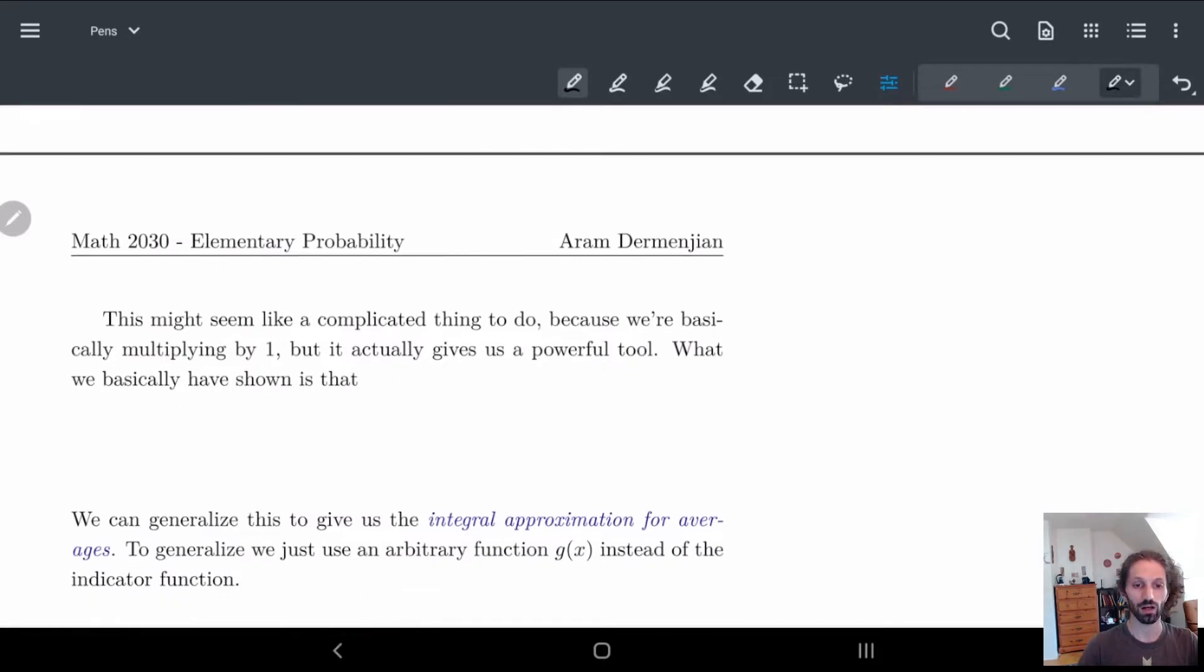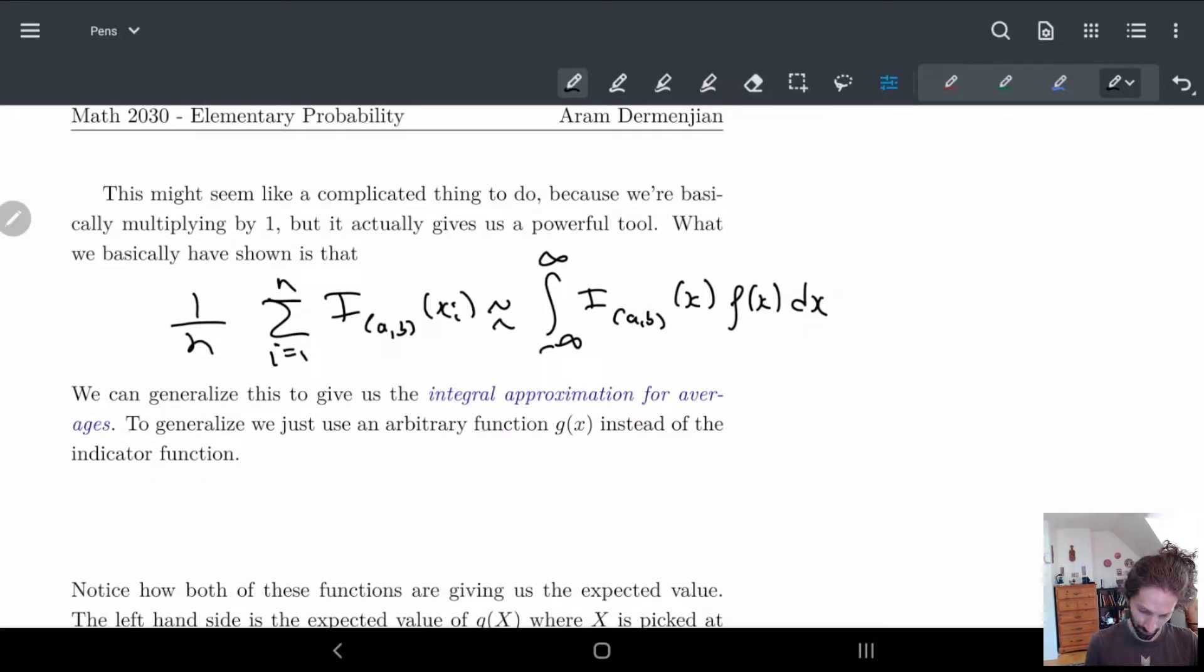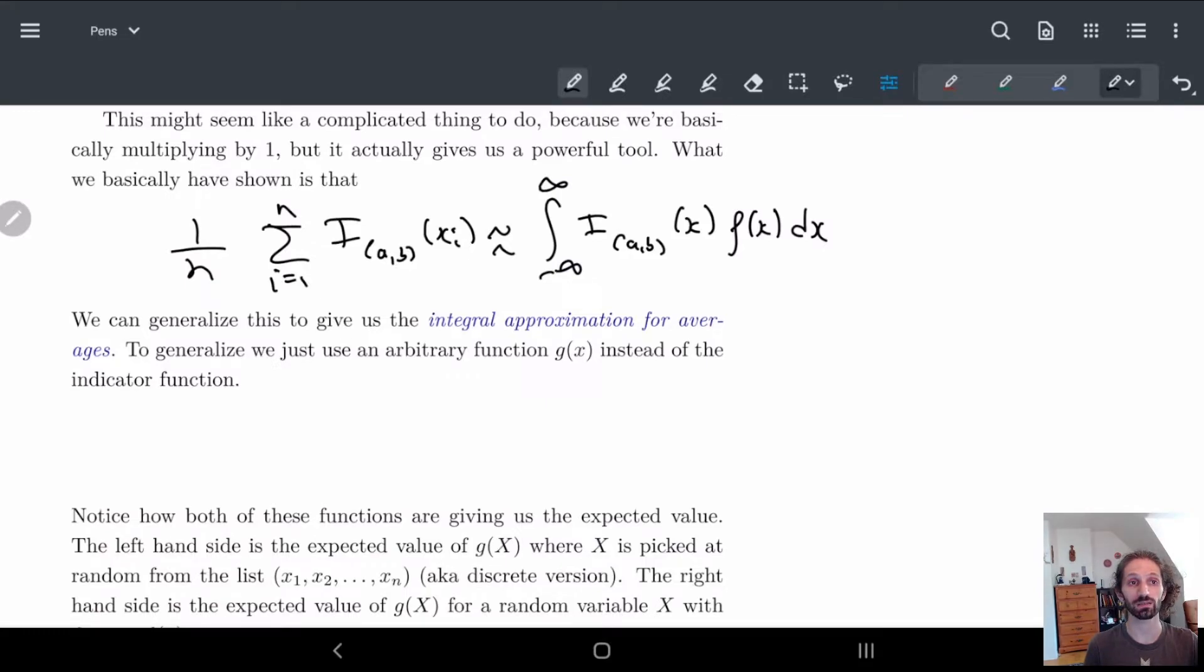But if you look at these two together we're basically saying something super strong. It might not seem very strong at first but if I put these next to each other, sum from i=1 to n of I_[a,b](x_i) is approximately equal to integral from minus infinity to infinity, and obviously here I need my n to be super large for this to work, I_[a,b] dx. So this is like approximate. And so what this gives us an integral approximation for averages. And basically what we want to do is just generalize this to a g of x. So in other words what we have is I have 1 over n, instead of using I_i I can use g of x_i here and this would then be equal to roughly this formula, integral of g of x f of x dx.